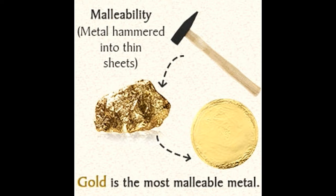Consider the example of gold to understand the concept of malleability. Platinum stands after gold and silver for its value of malleability, and it can be shaped as desired for use in making jewelry. Consider another example of aluminum — it can be hammered into thin foils, which are used in wrapping food items. This metal can also be shaped to be used in making cooking utensils.